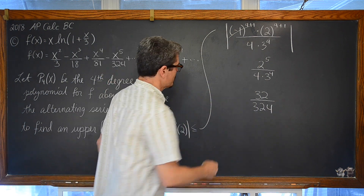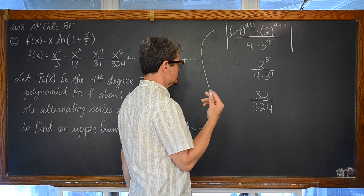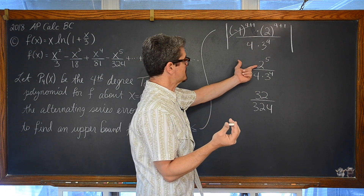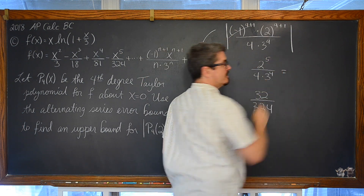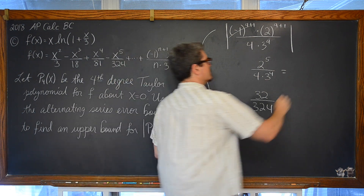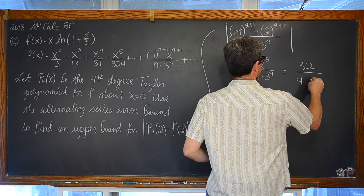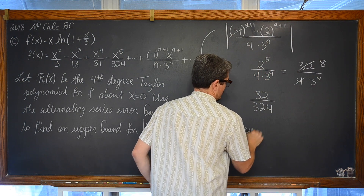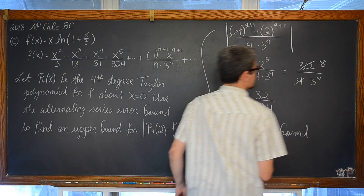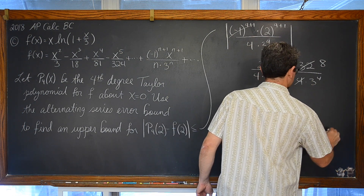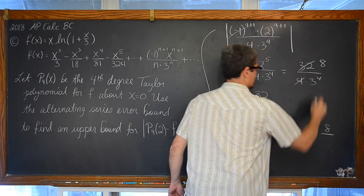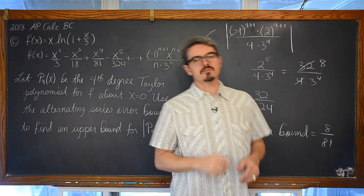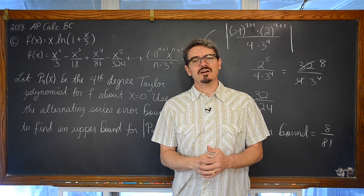So the upper bound is equal to: 2 to the fifth is 32, and 4 times 3 to the fourth — 3, 9, 27, 81 — so 4 times 81 is 324. The upper bound of this error is equal to 32 over 324. And that is the end of our 2018 Calculus BC exam, or at least the end of number 6. I'm Mr. Tarrou — go do your homework!